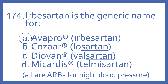Irbesartan is the generic name for Avapro. Losartan is the generic name for Cozaar. Valsartan is the generic name for Diovan. And Telmisartan is the generic name for Micardis. You can tell from the '-sartan' suffix that these are all ARBs, or angiotensin receptor blockers, for high blood pressure.